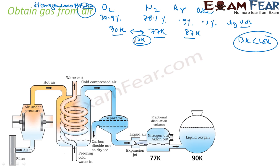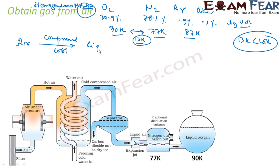What we do is take air, compress it by applying pressure, and also cool it down. When you cool and compress it, you get liquid air. To liquefy something you either increase the pressure or decrease the temperature — here we are doing both.